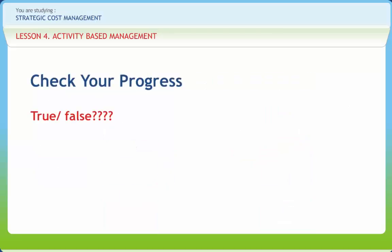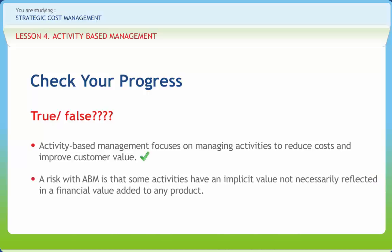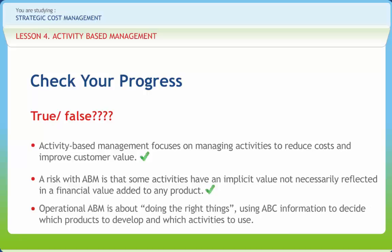Now let us check if we have understood the various concepts discussed in this lesson clearly. Activity-based management focuses on managing activities to reduce cost and improve customer value — Right or Wrong? Right. A risk with ABM is that some activities have an implicit value not necessarily reflected in a financial value added to any product — Right or Wrong? Right. Operational ABM is about doing the right things using ABC information to decide which products to develop and which activities to use — Right or Wrong? Wrong.